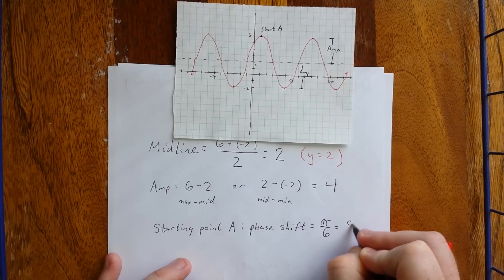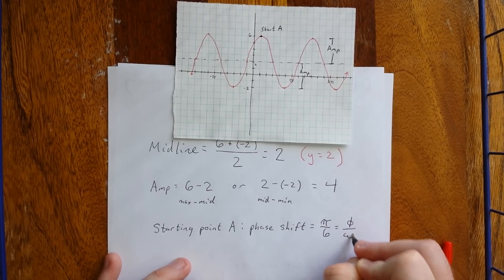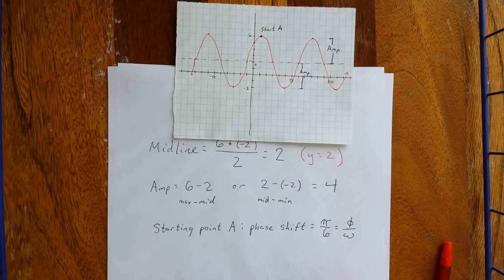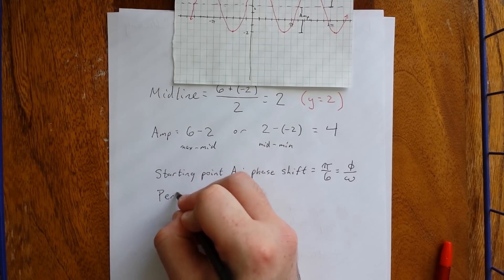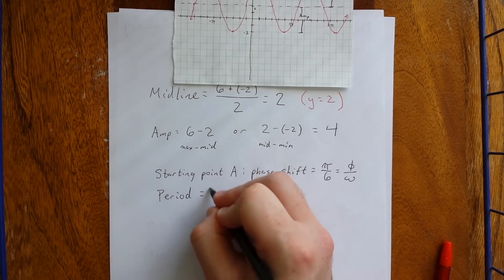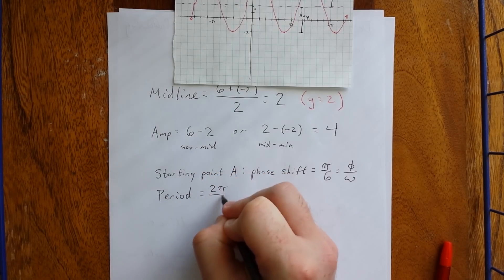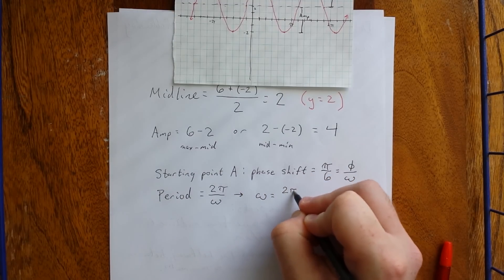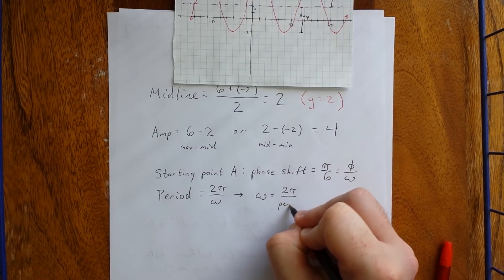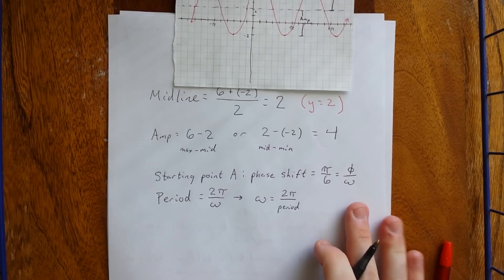Now according to the formula that we know so well, this is equal to phi over omega. Unfortunately, we still need to calculate omega in order to figure out what phi is, so we're going to need the period. And the period is equal to 2 pi over omega. Solving this for omega, we would get omega is equal to 2 pi divided by the period. The period we can get from the graph.